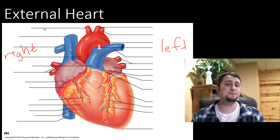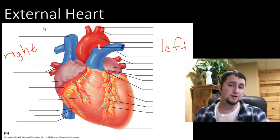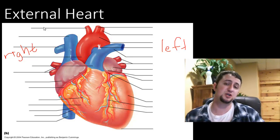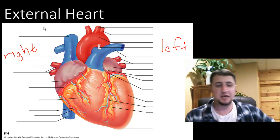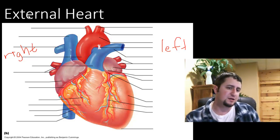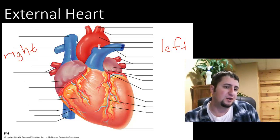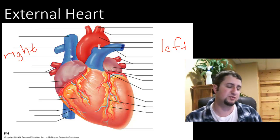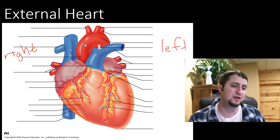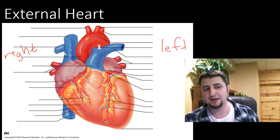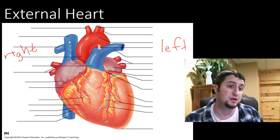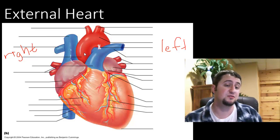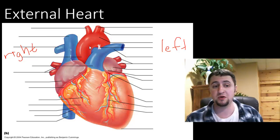It just so happens that your heart is more positioned towards the left side than the right side. You also may look here and notice you have some blue things and some red things. The blue things are primarily veins and the red things are primarily arteries.